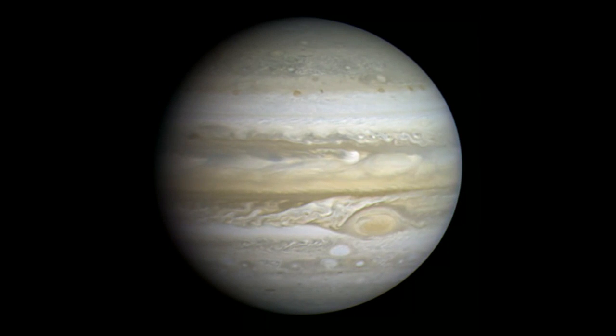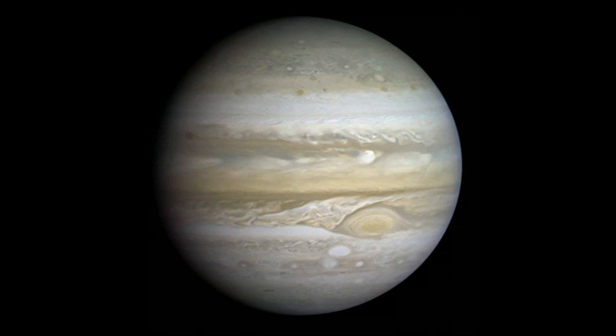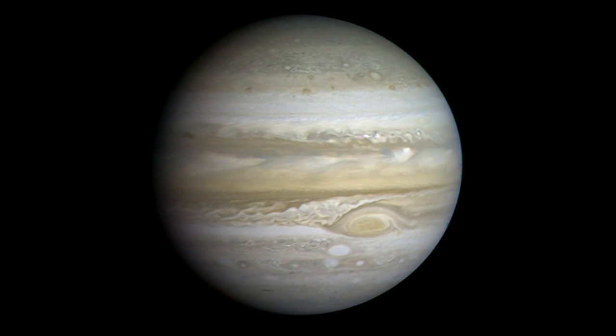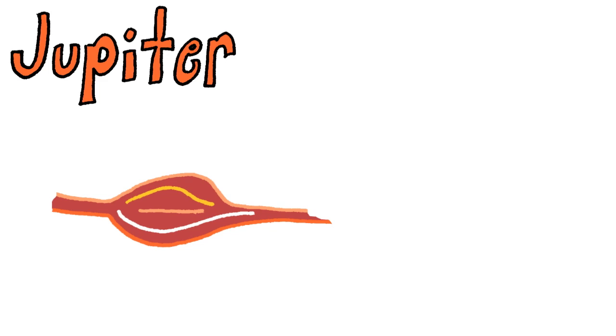Now onto the gas giants. First up, Jupiter. As I mentioned earlier, Jupiter has no seasons whatsoever, but that doesn't really matter when hurricane season lasts all year. In fact, the most famous of these hurricanes, the Great Red Spot, has been swirling for about 400 years. For comparison, the storm is so big that three Earths could fit inside of it.